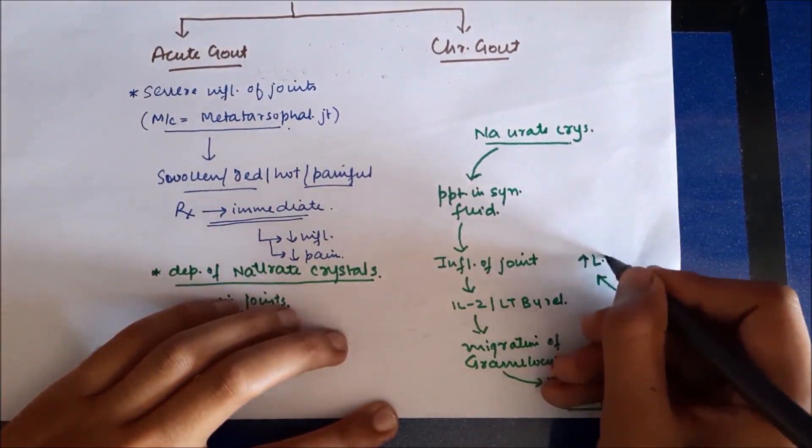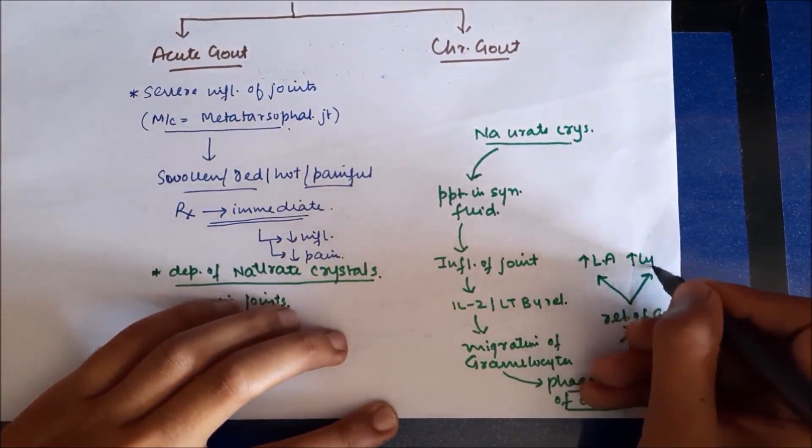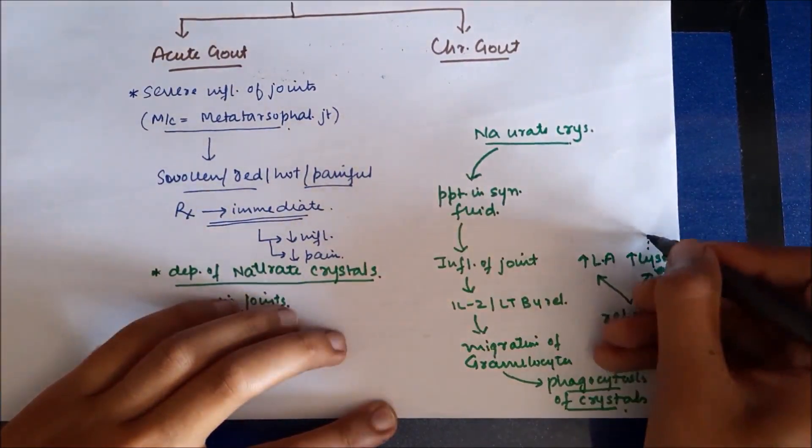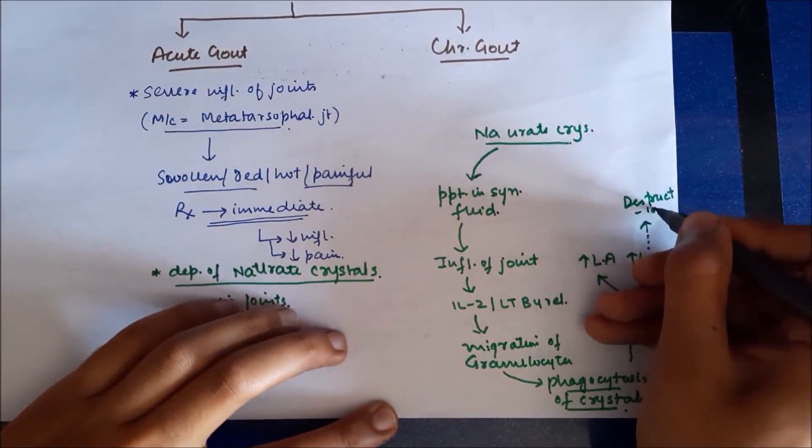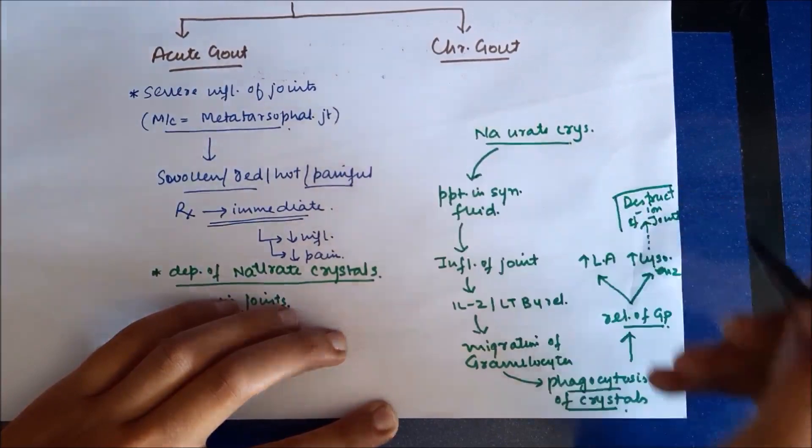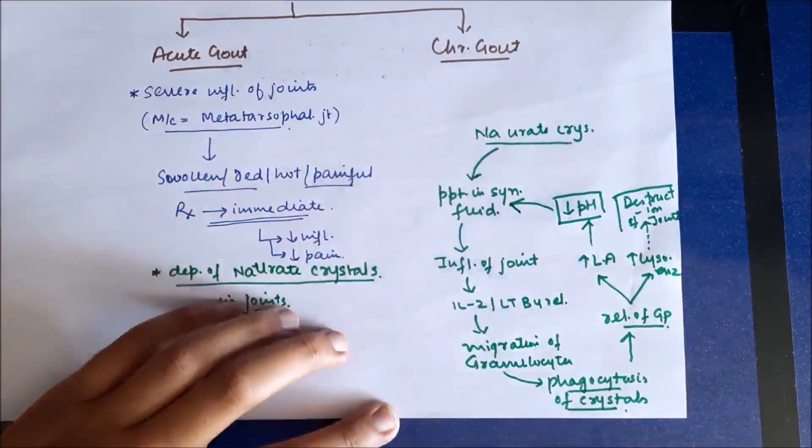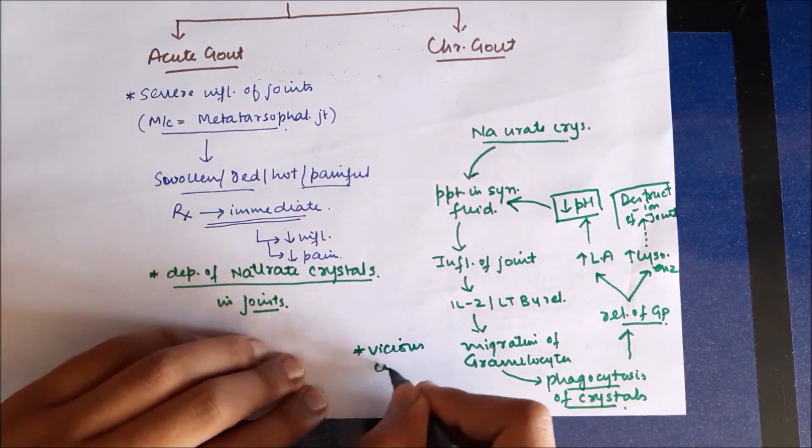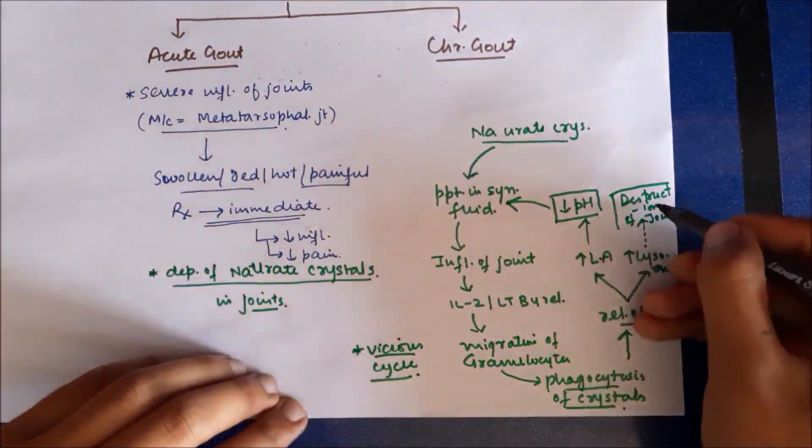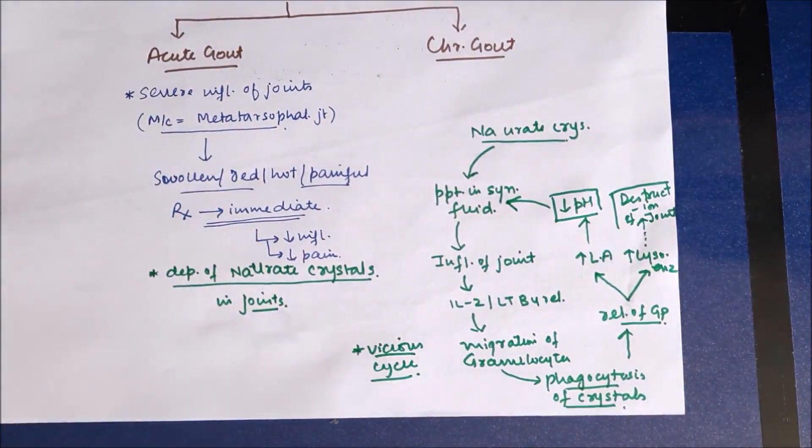These lysosomal enzymes cause destruction of the joints, and the increase in lactic acid results in decrease in pH of medium, which causes more precipitation of monosodium urate crystals. Thus, this results in development of a vicious cycle causing destruction of joint.